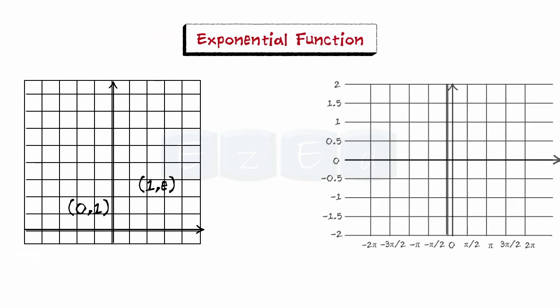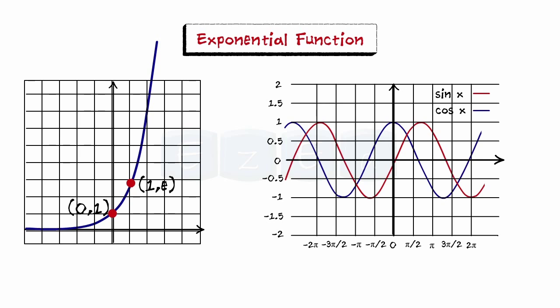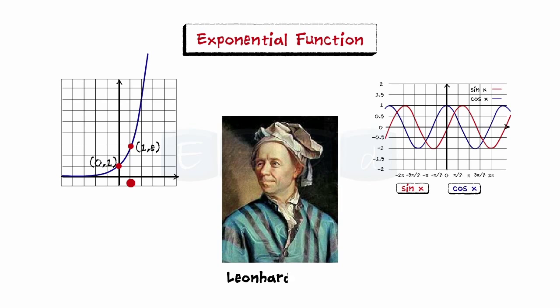As you know, the exponential function e^x increases exponentially as input x grows. But what does this exponential function have to do with periodic, oscillating functions — cos x and sine x? The answer was given by Leonard Euler.